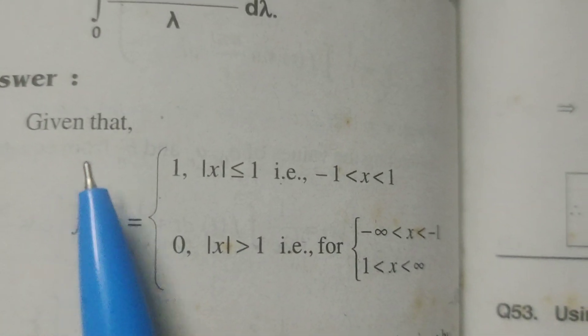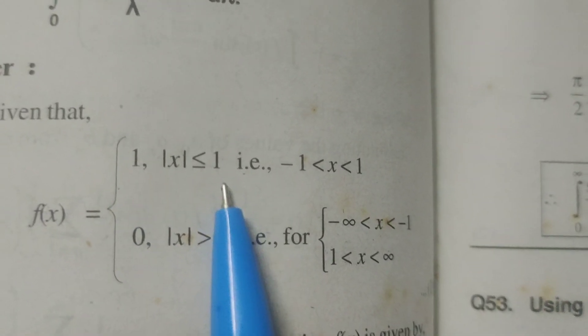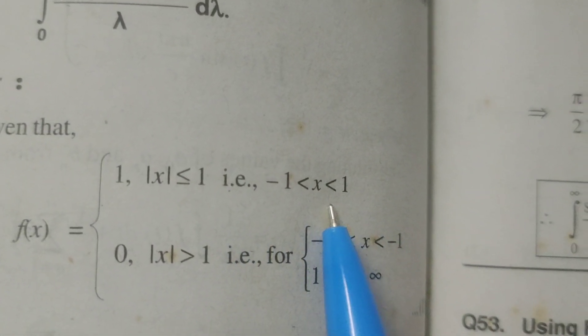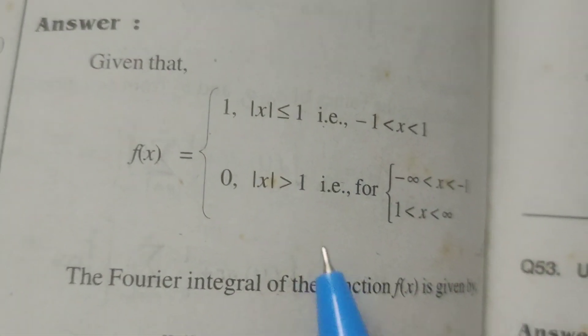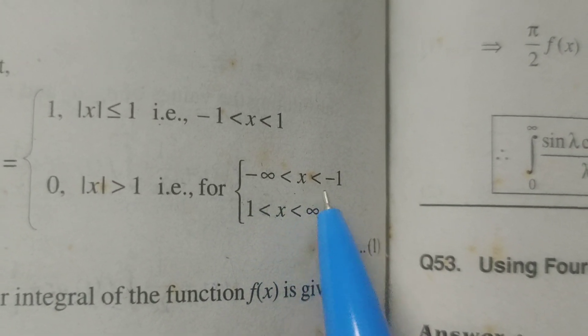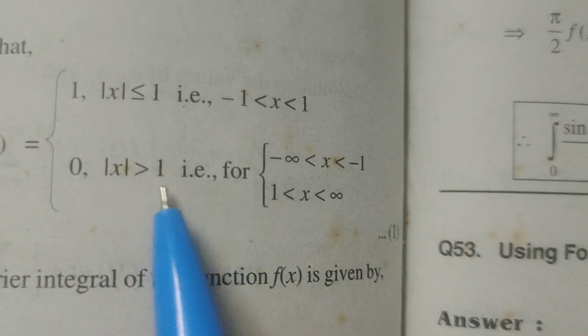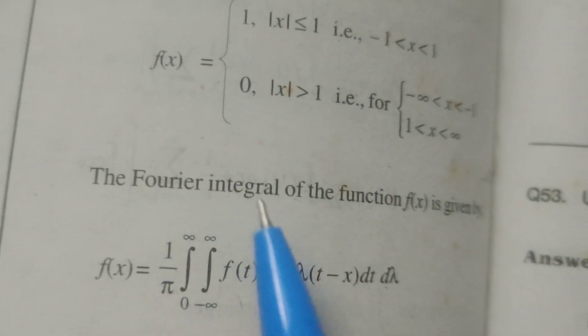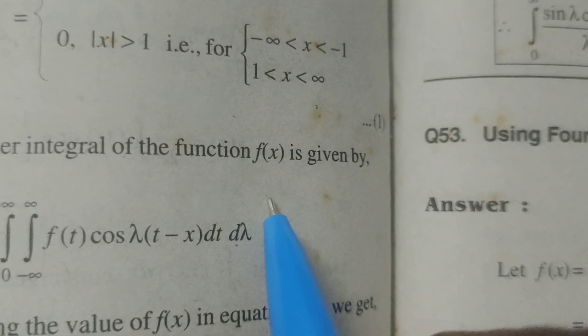Given the function f(x): equals 1 when |x| ≤ 1, that is −1 ≤ x ≤ 1; and equals 0 when |x| > 1, that is −∞ < x < −1 and 1 < x < ∞.